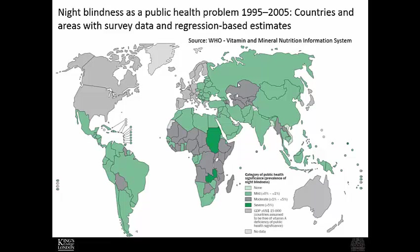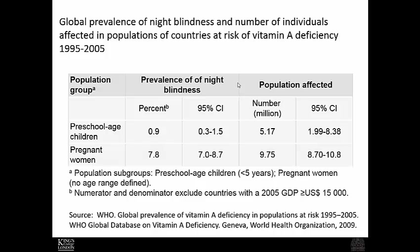A similar heat map describing night blindness, using data from 1995 to 2005, overlays very closely with the low serum retinol data. In terms of prevalence, approximately 1% of all preschool-aged children worldwide — about 5.17 million children — have night blindness. For pregnant women, this accounts for approximately 8%, or almost 10 million pregnant women, suffering from vitamin A deficiency presenting clinically as night blindness.